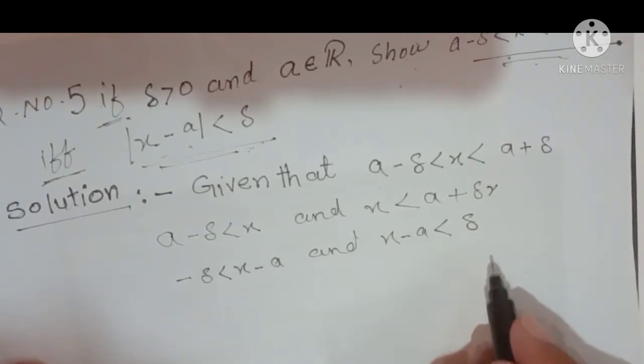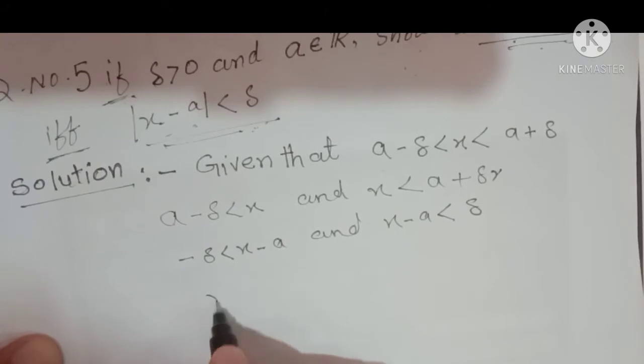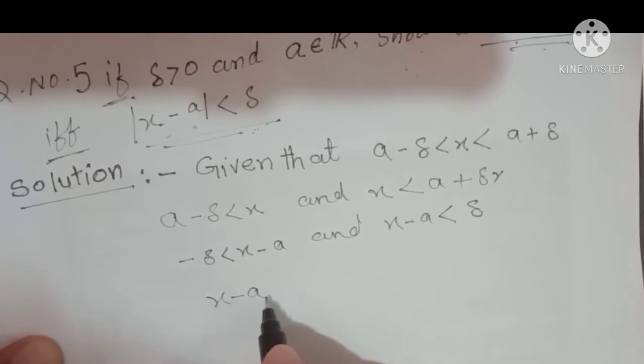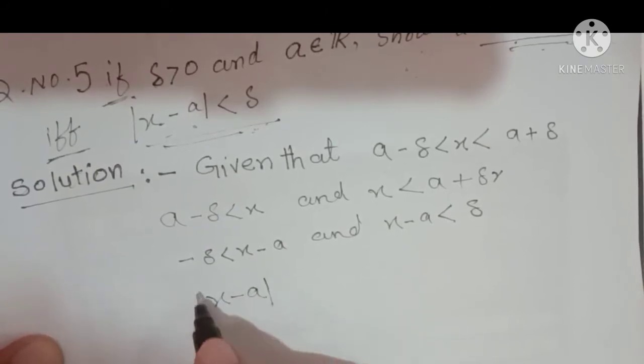This means we can apply the absolute value definition. Combining these two inequalities gives us |x minus a| < delta.